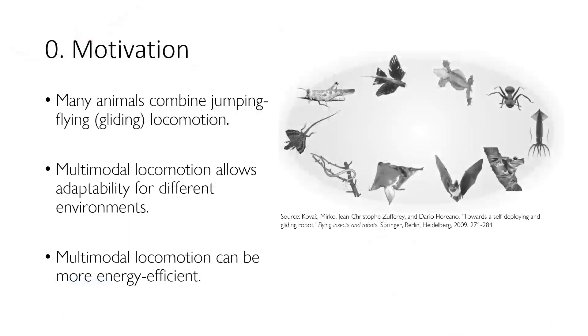Our work is inspired by nature, where many flying animals like birds and insects are able to effectively move on the ground. The multimodal locomotion could enable the ability to adapt motion to different environments and allow for more energy-efficient locomotion. Examples from animality that combine flying and jumping are birds, bats, and locusts, to name only a few.